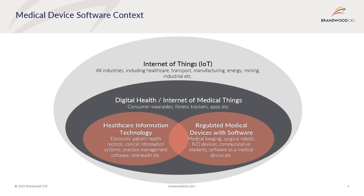Health information technology examples include electronic patient health records, clinical information systems, practice management software, and telehealth. Regulated medical devices with software examples include medical imaging, surgical robots, IVD devices, communicative implants, and software as a medical device.